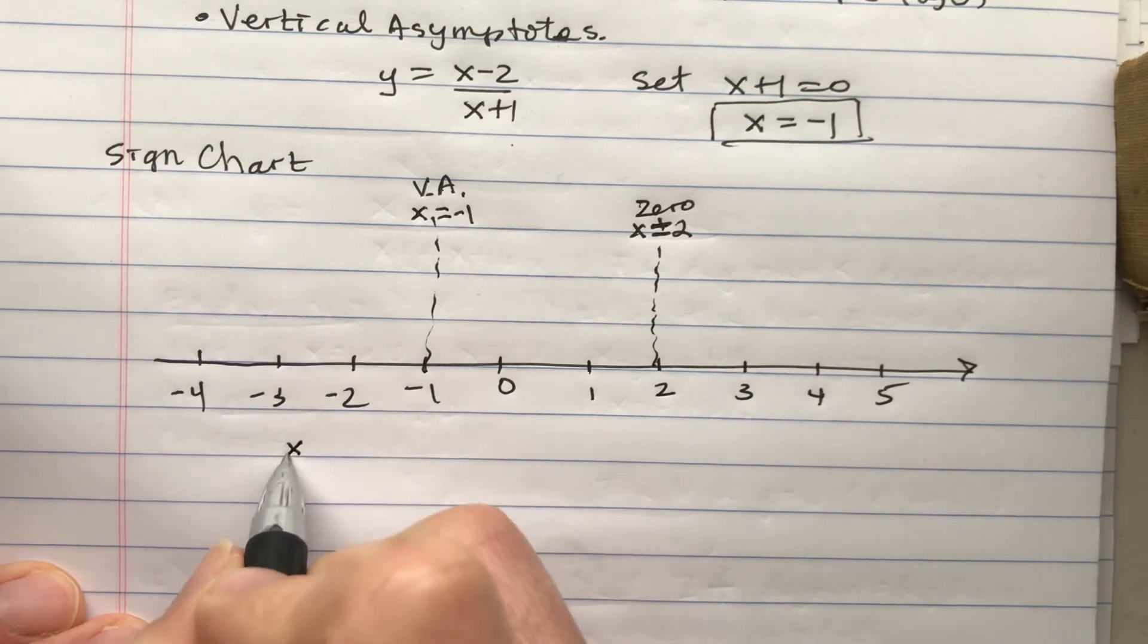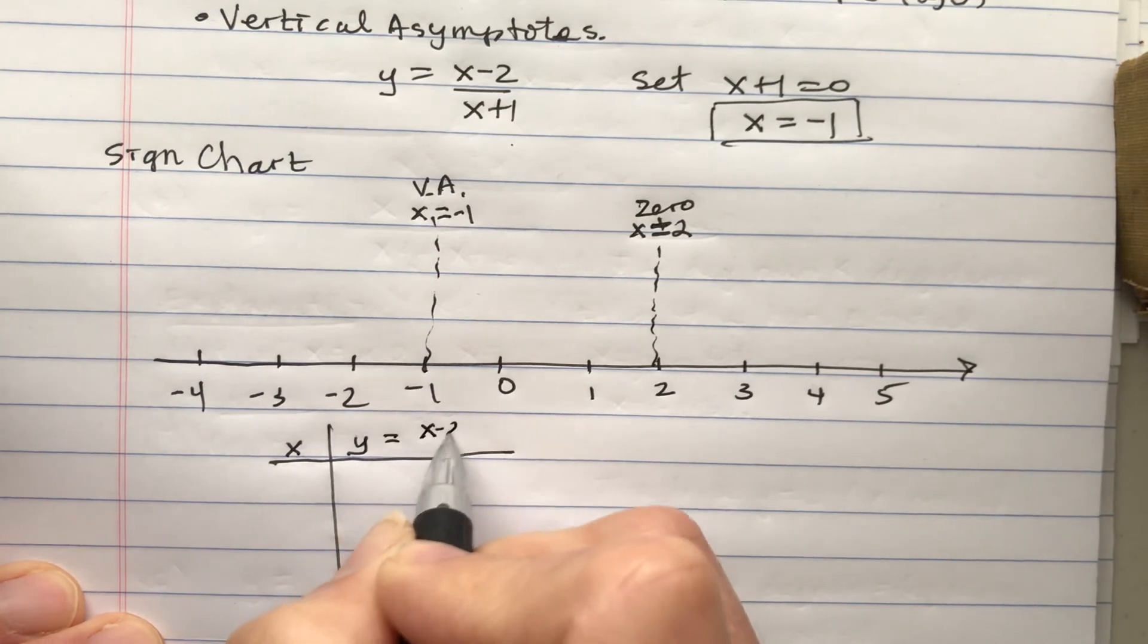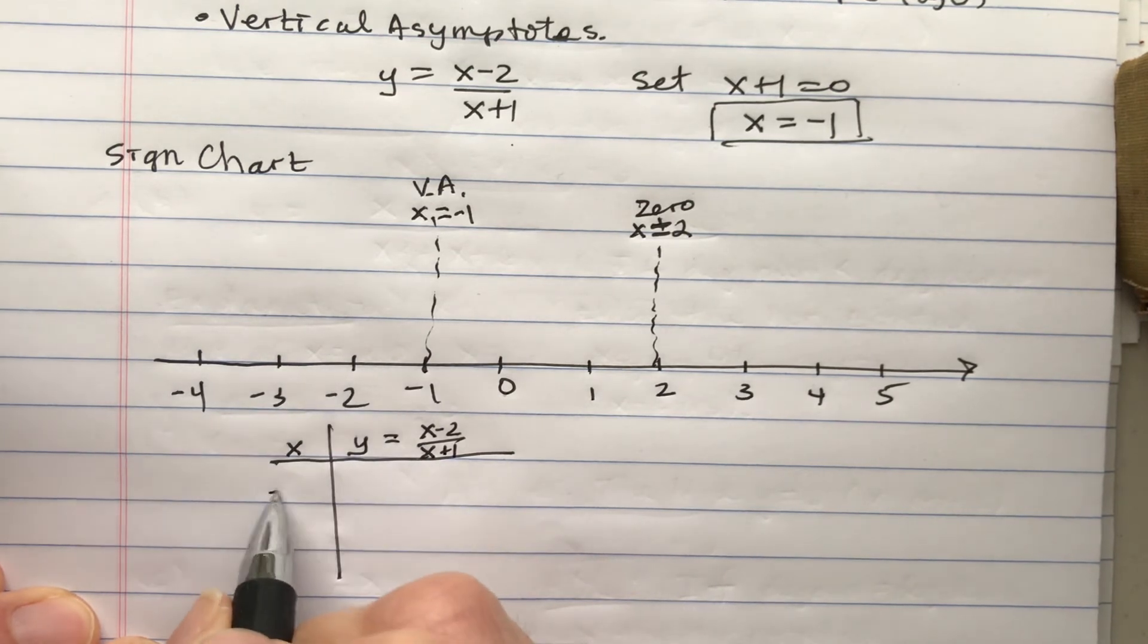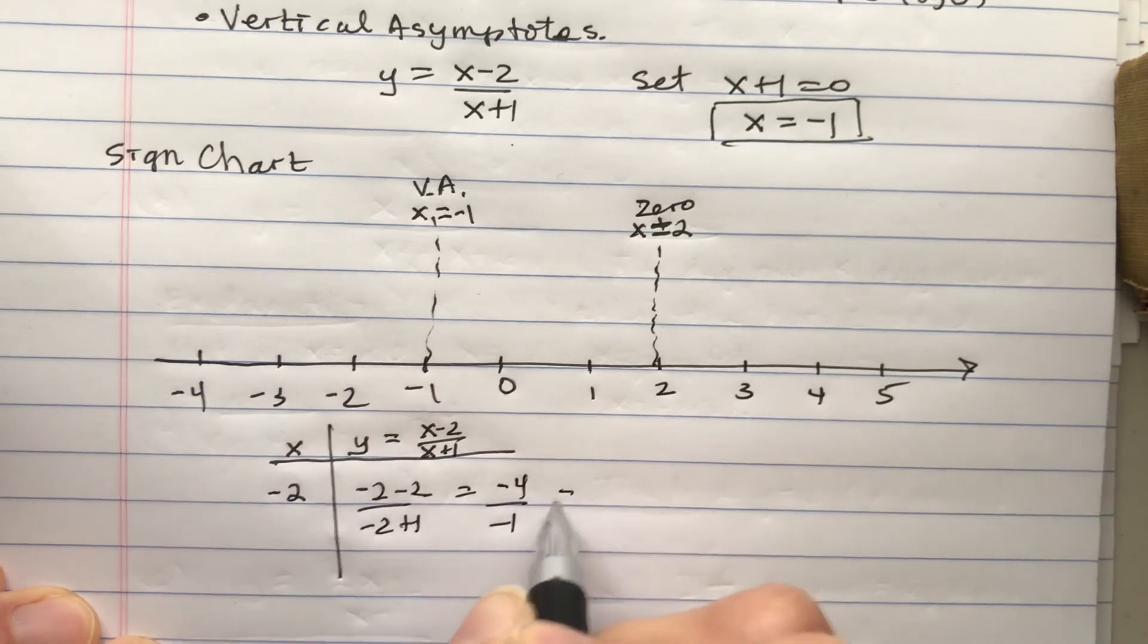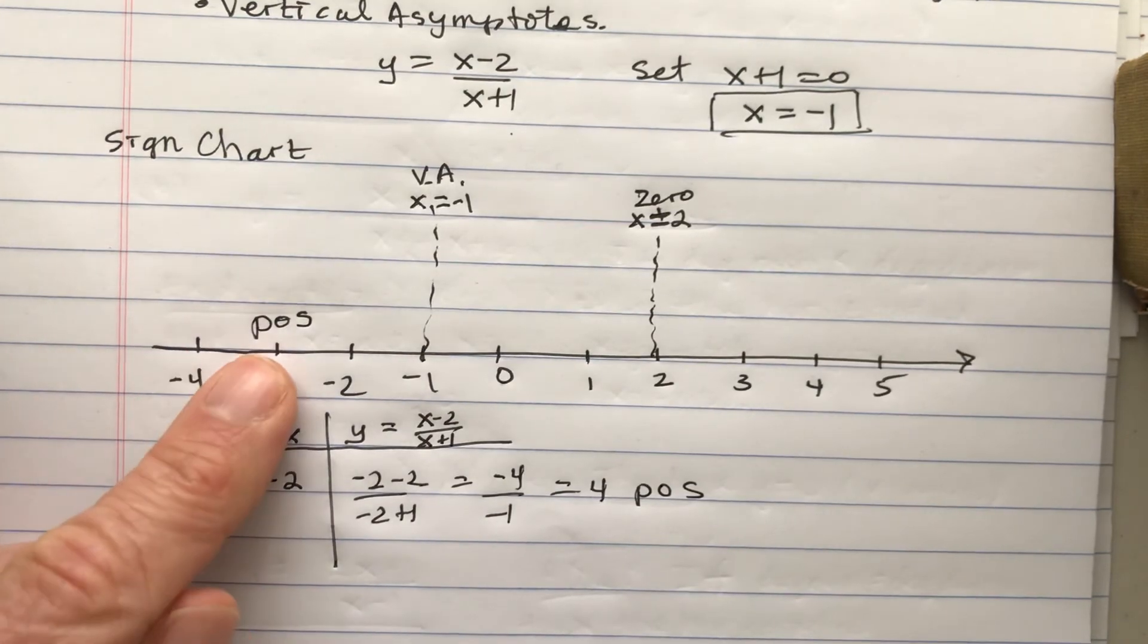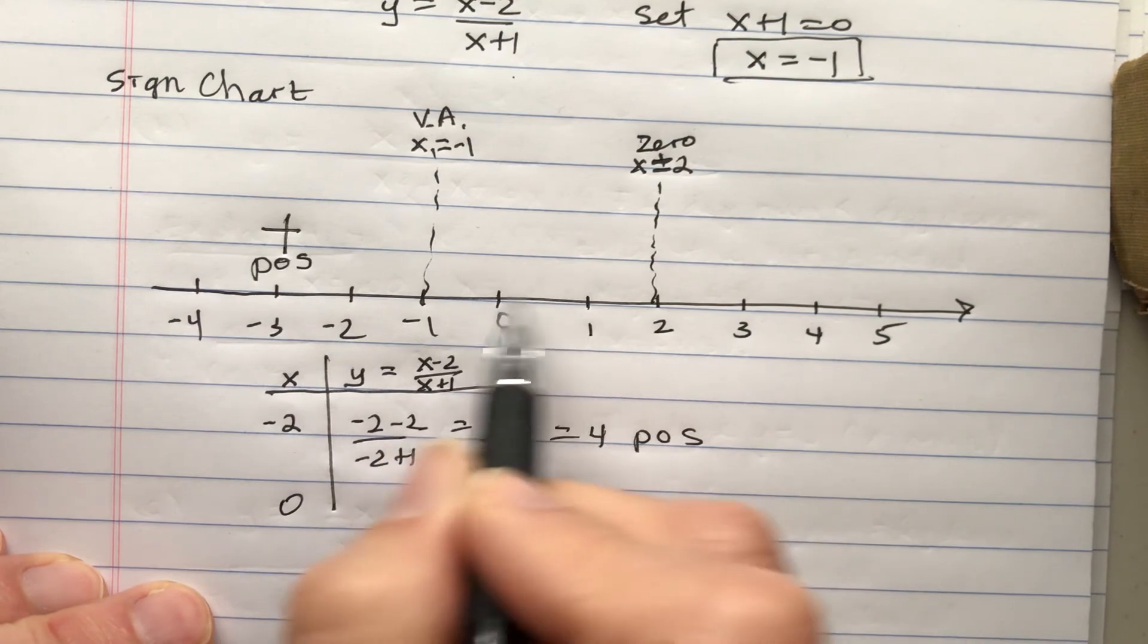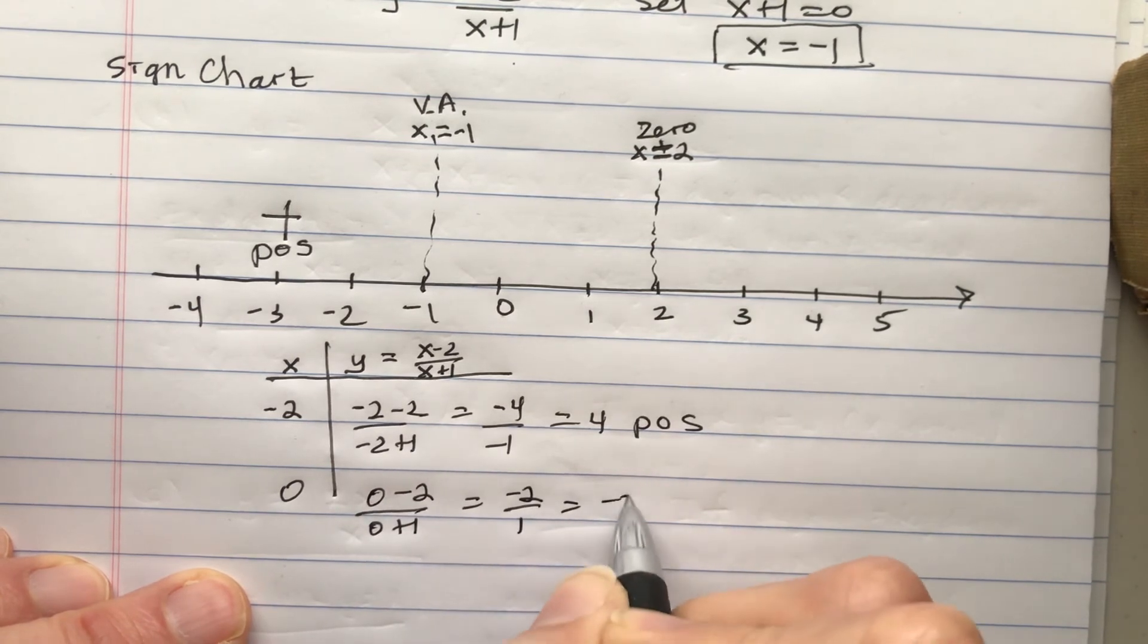And then what we do is we just plot points. I pick one point from each interval, and I try to pick convenient numbers. I could put like negative 2.3, but it's easier to just put negative 2 in. And the point is that this is positive. The sign chart is saying one is positive and one's a negative. That's what we mean by sign. Zero is a convenient number from the next interval. Zero minus 2, zero plus 1, that makes negative 2 over 1. And that's negative.